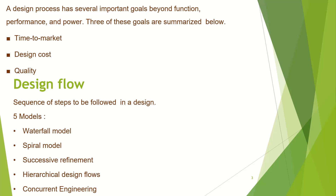The first one is the waterfall method, which is proposed for the software development process. This model consists of 5 major phases: requirement, architecture, coding, testing, and maintenance. The second method is a spiral model. The next method is successive refinement. Followed by hierarchical design flows. And the last one is concurrent engineering.